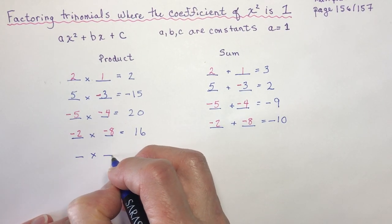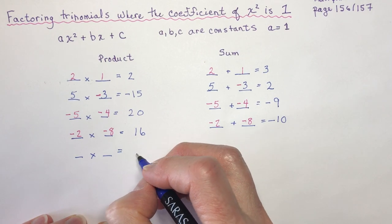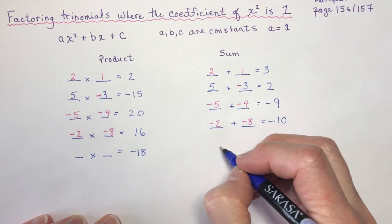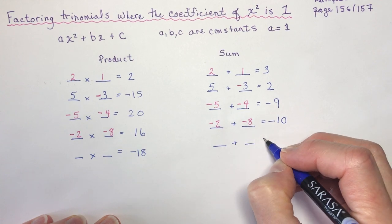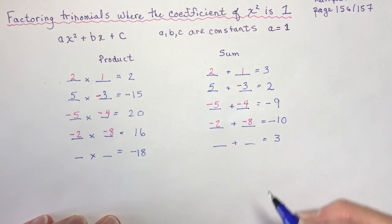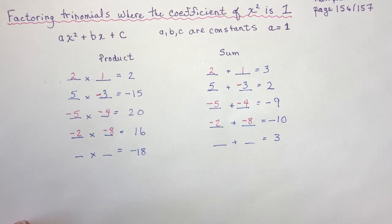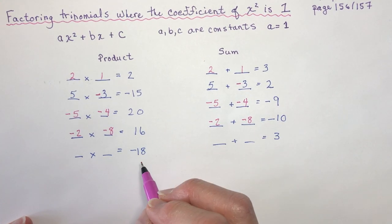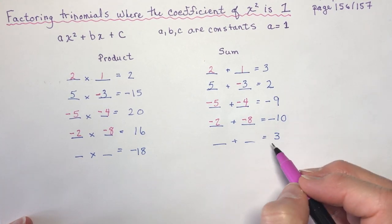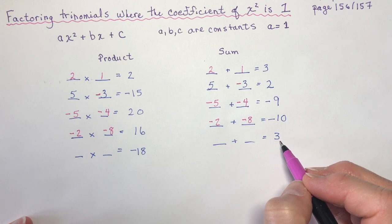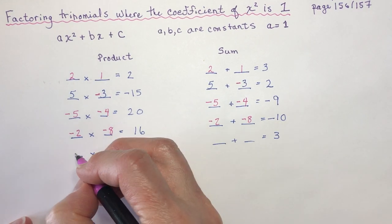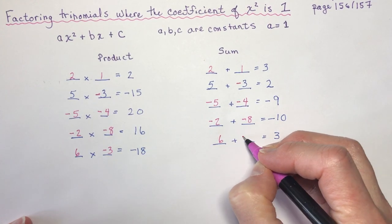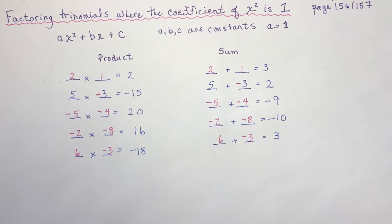What two numbers multiply to negative 18 and add to positive 3? Because the answer is positive, the larger number has to be positive. So 6 and negative 3 — 6 minus 3 gives 3, and 6 times negative 3 is negative 18.